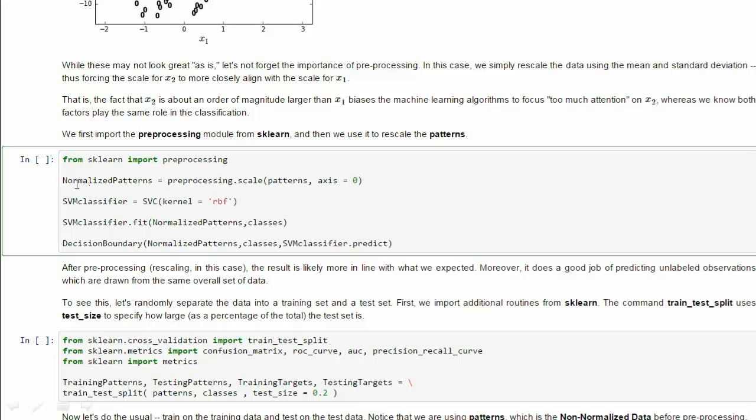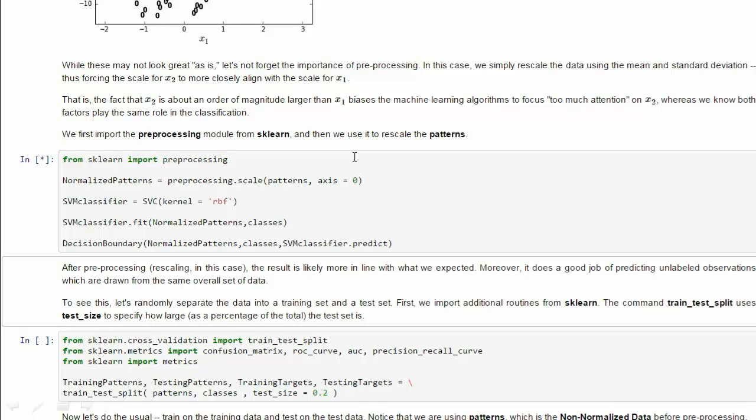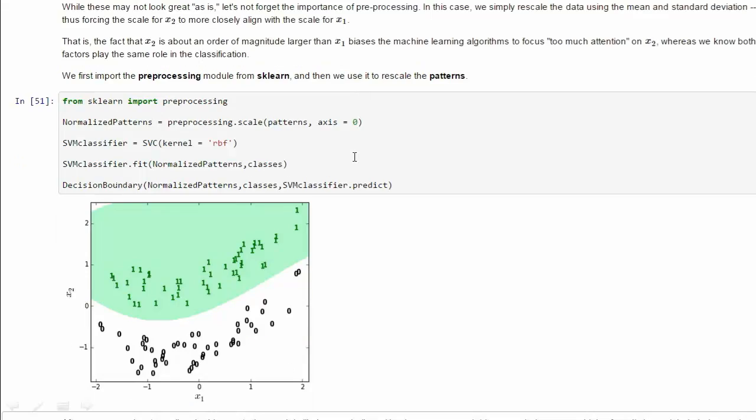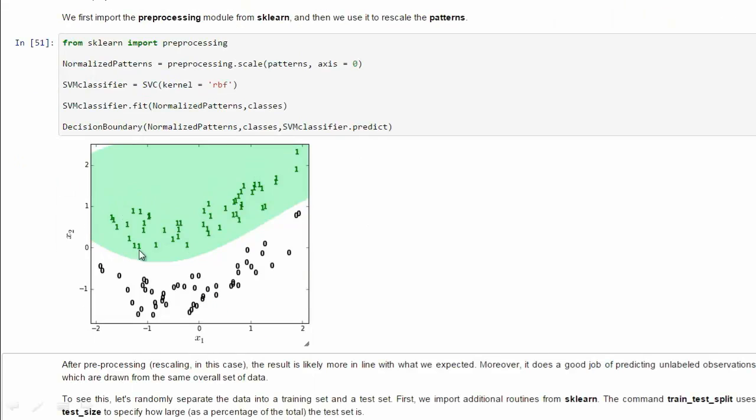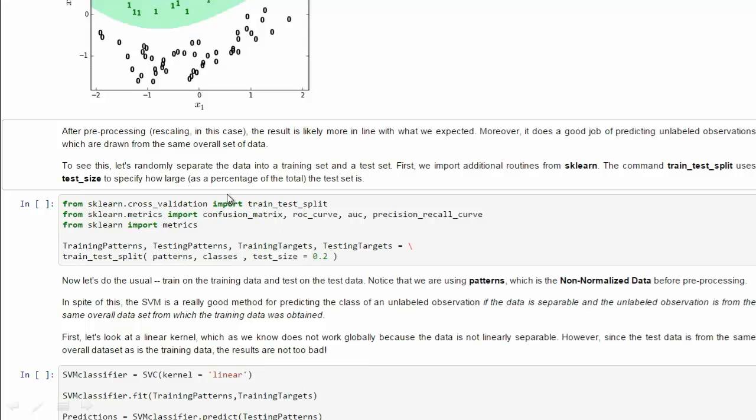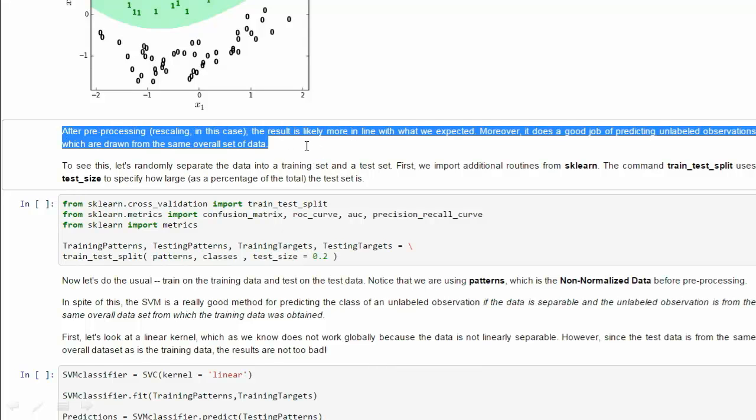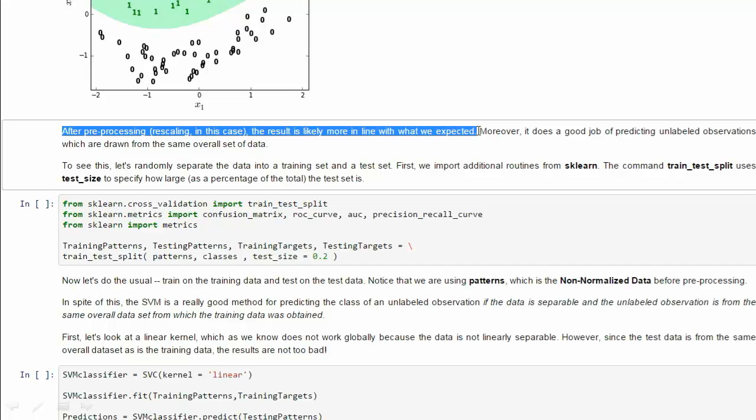We import preprocessing from our sklearn here. We normalize our patterns by rescaling them. Now, let's go back to our radial basis function. Well, that's kind of nice. That's what we would have thought, some sort of parabolic separator here. So, the preprocessing really was a nice feature here.